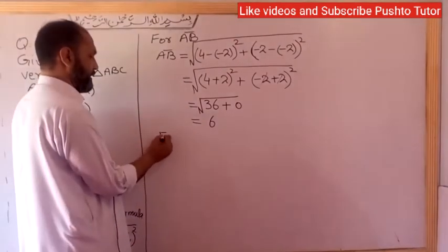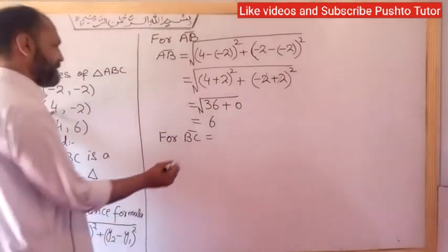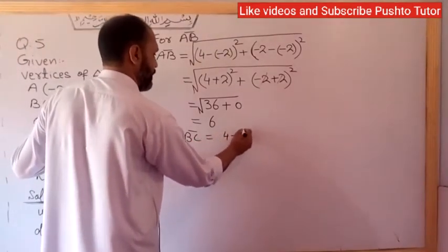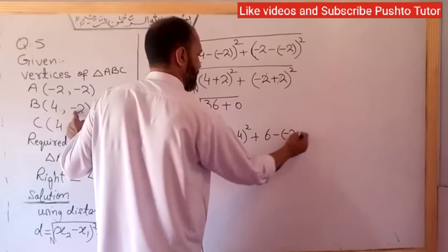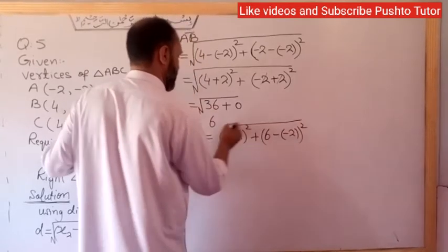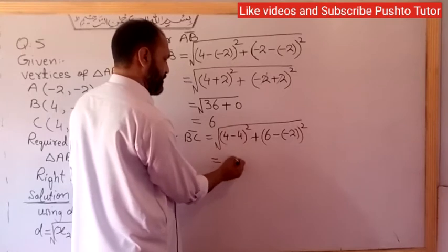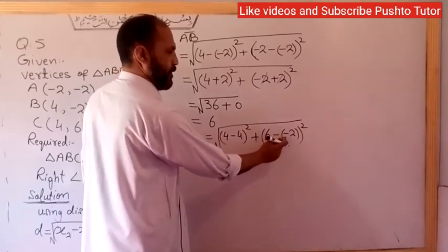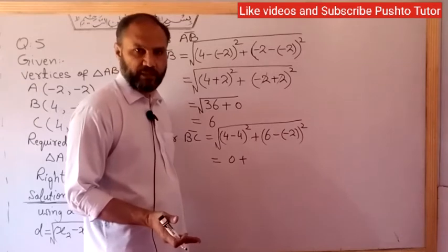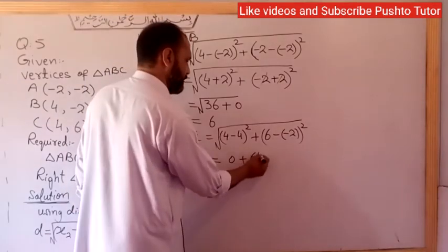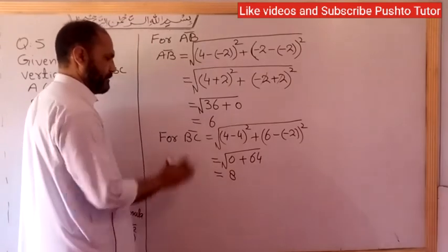Now finding BC. For B(4,-2) and C(4,6): (4 - 4)² + (6 - (-2))² = 0² + 8² = 0 + 64 = 64. Under square root of 64 gives BC = 8.